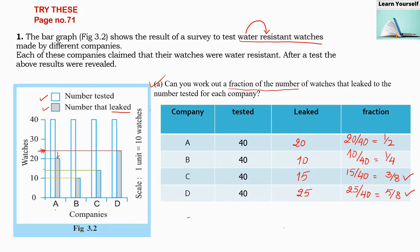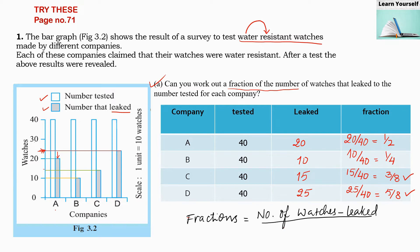So these are our fractions — the number of watches which were leaked divided by the number of watches tested. These are the answers for the first question.